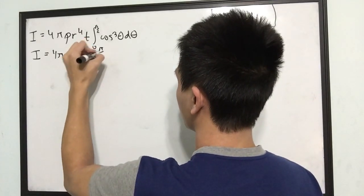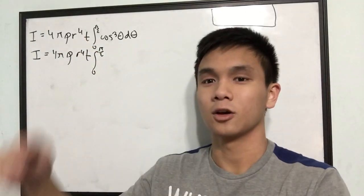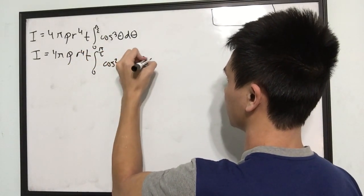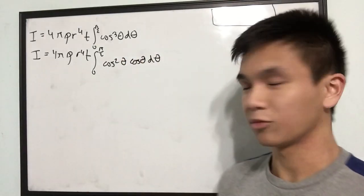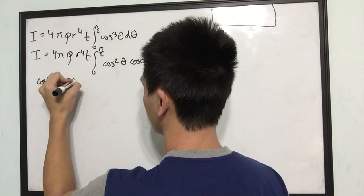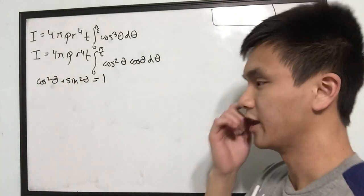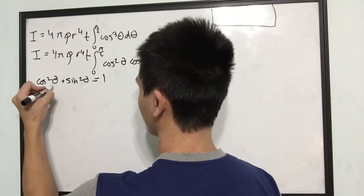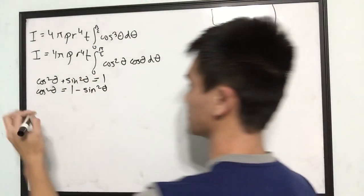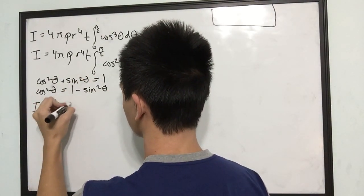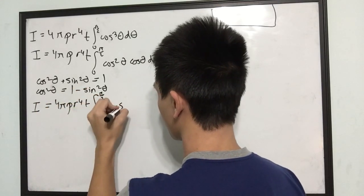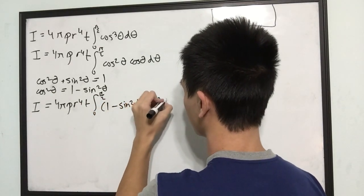Integrating this is not too bad. If you agree that cos³θ can be rewritten as cos²θ · cosθ, and using the identity cos²θ + sin²θ = 1, we can substitute (1 − sin²θ) for cos²θ. So this becomes the integral of (1 − sin²θ)·cosθ dθ.